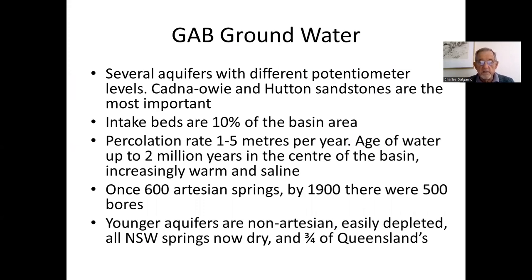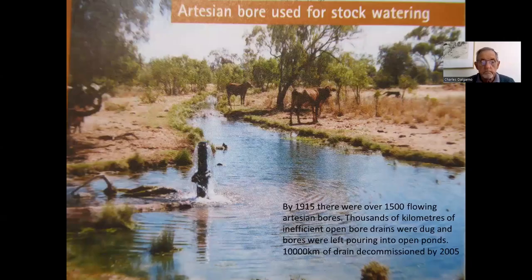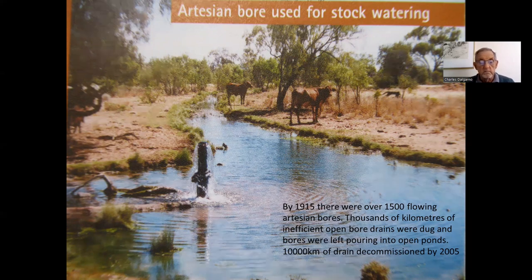Many of the younger aquifers are non-artesian and very easily depleted. All the New South Wales natural springs are now dry, and most of Queensland's also. By 1915 there were over 1,500 flowing artesian bores, causing enormous loss of water by evaporation, and there were literally thousands of kilometres of inefficient open bore drains left pouring into open ponds. At the turn of the 21st century, some 10,000 kilometres of drains were decommissioned.